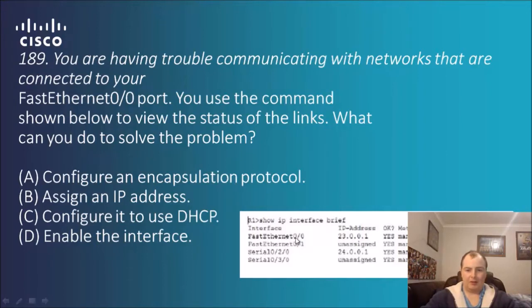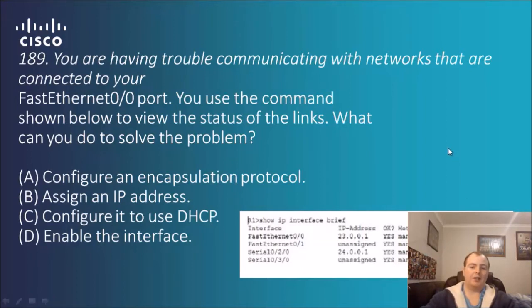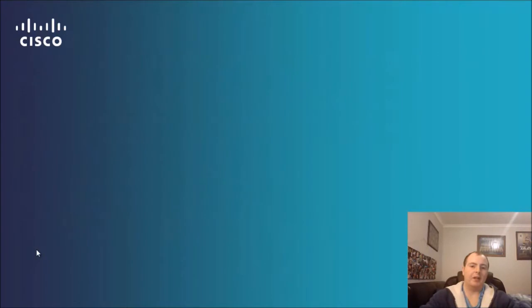Looking at the FastEthernet 0 port — it has an IP address, that's all good. But the interface shows as administratively down. There are a few ways a certain interface can be down. Administratively down generally means it's been configured to be down. In order to resolve the problem, we would have to enable the interface, which would take it from administratively down to up and running.